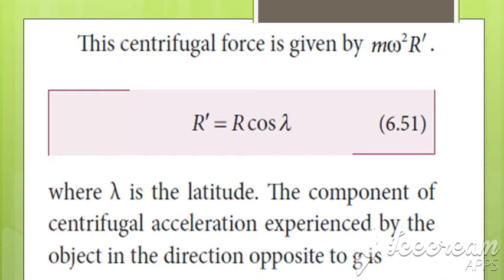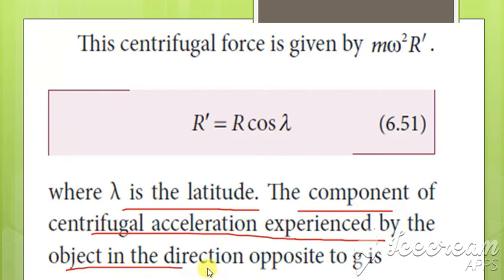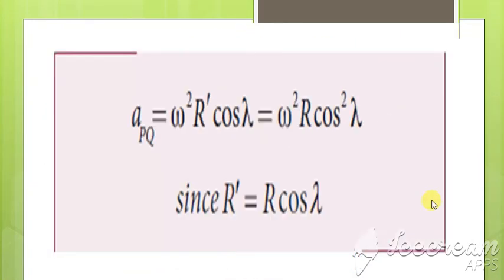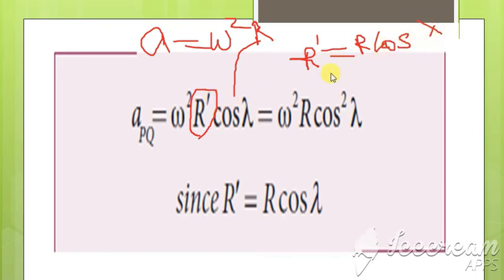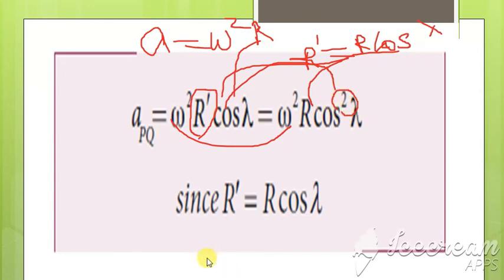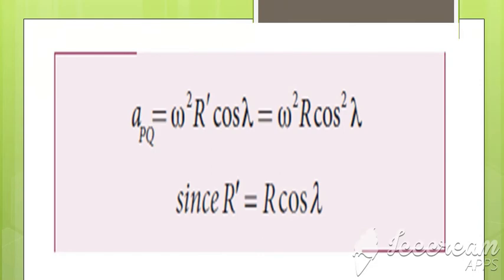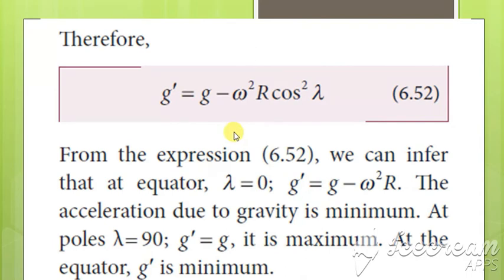The centrifugal force is M·ω²·R', where R' can be written as R·cos(λ), with λ denoting the latitude. The centrifugal acceleration A experienced by the object is ω²·R'. Substituting R' = R·cos(λ), we get A = ω²·R·cos(λ)·cos(λ) = ω²·R·cos²(λ). Therefore, the effective acceleration due to gravity is given by G' = G − ω²R·cos²(λ).